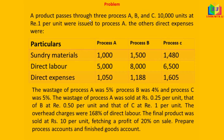A product passes through 3 processes: A, B, and C. 10,000 units at rupee 1 per unit were issued to process A. The other direct expenses were given — sundry material for all 3 processes, direct labour for the 3 processes, and direct expenses for the 3 processes were given.